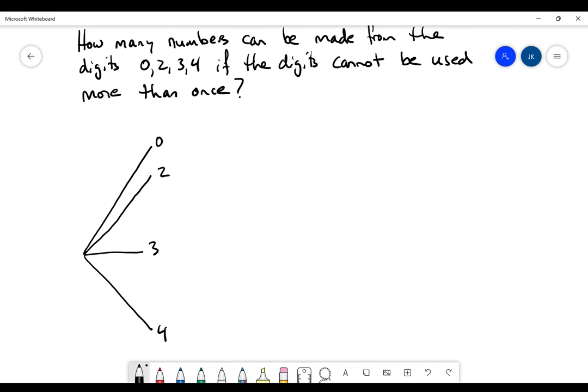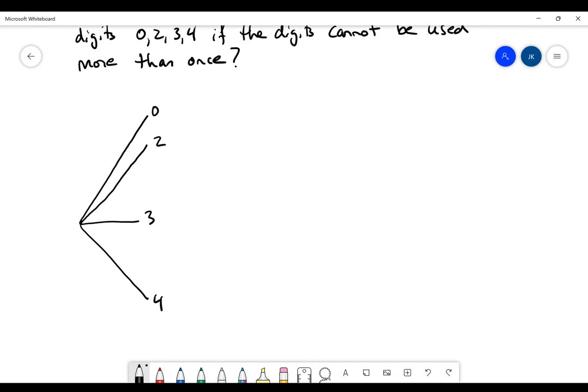Now this is going to be different from some of the other tree diagrams you might do, because we're not going to go to the very end to get the final answer. We're actually going to go branch by branch, because the question doesn't specify how many digits the number can have. Now 0 doesn't produce any other options because you can't start a number with 0.